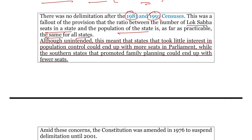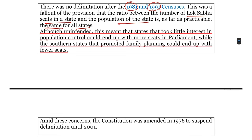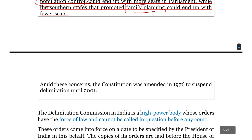यह भी concern था कि कुछ states ने population control में काफी कम interest लिया, तो उन्हें ज़्यादा seats मिल जाएंगी अगर delimitation दुबारा हो। और जो states थे जहाँ family planning की promotion हुई और अच्छे results आए, उन्हें कम seats मिल सकती थीं। इसी concern के चलते Constitution को 1976 में amend किया गया था, ताकि delimitation को 2001 तक suspend किया जा सके। इसलिए 1981 और 1991 में कोई delimitation नहीं हुई।